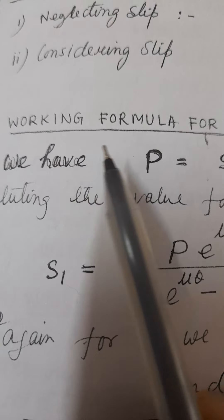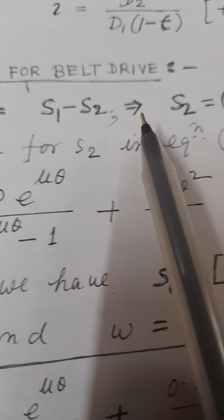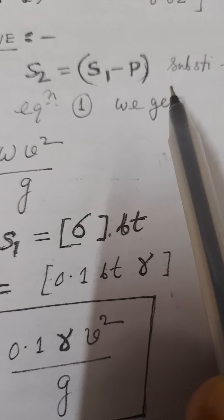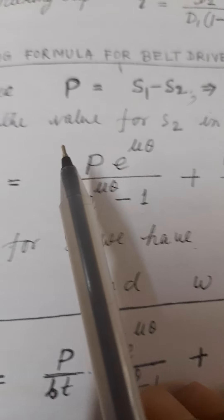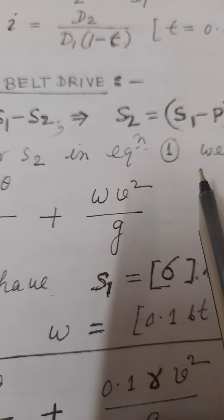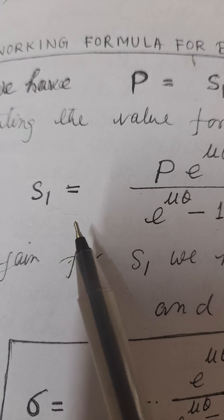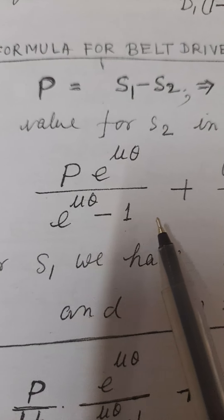Now, the working formula for belt drive: we have P equals S1 minus S2, so S2 equals S1 minus P. Substituting this value of S2 in equation one, which I have already done in another video, we get this formula.